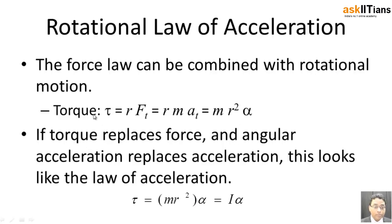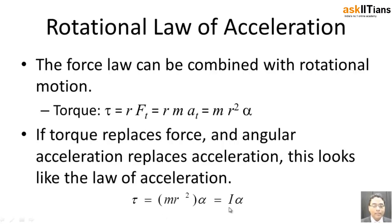Taking it further, if we want to write torque in terms of moment of inertia, we know that mr² can simply be written as the moment of inertia I, and α is the angular acceleration. So torque is simply written as τ = Iα, where I is an analog of mass and α is an analog of linear acceleration.